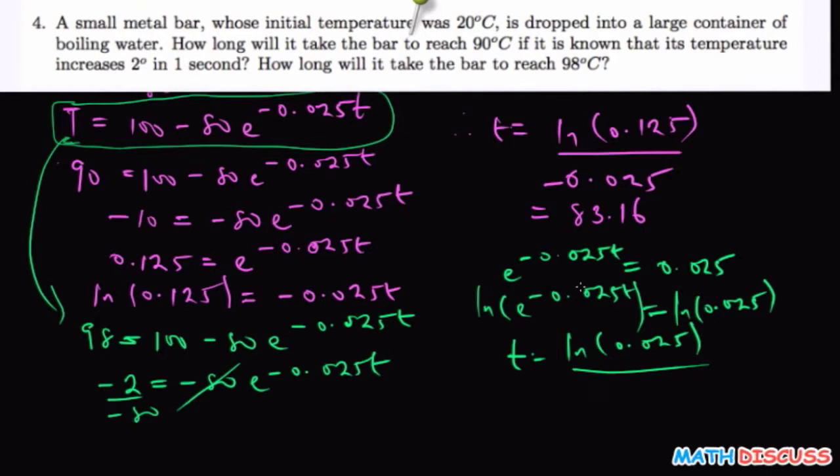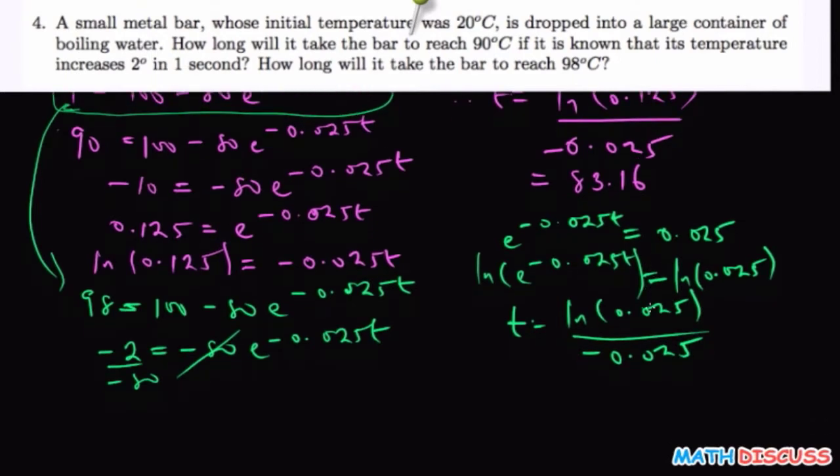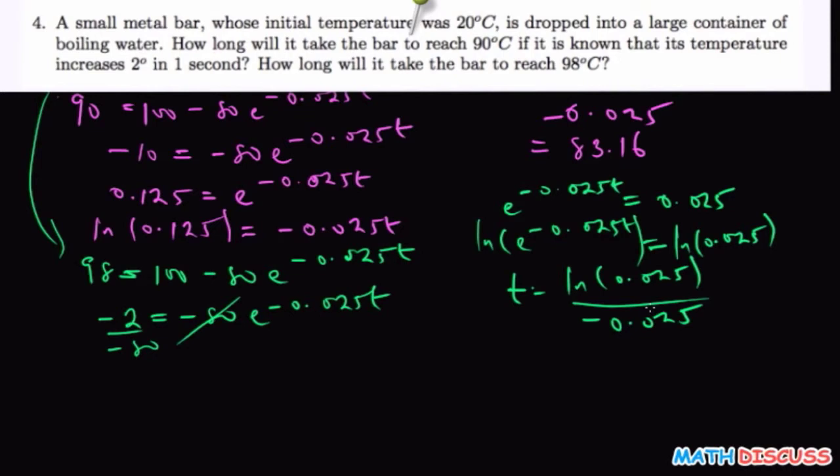divided by negative 0.025. And then when you do that, the final answer for your t